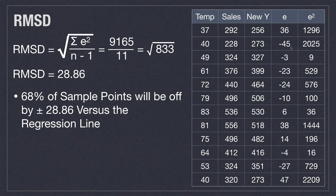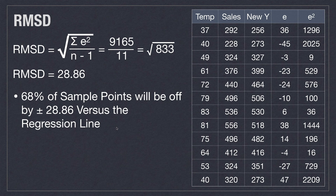If I calculate E by subtracting the value of my regression line from the sample Y, I then square all those values and find their sum. If I divide by the number of samples minus one and then find the square root, I get a value of 28.86. That means for one standard deviation — which covers 68% of all samples — our regression line will be off at most by plus or minus 28.86.